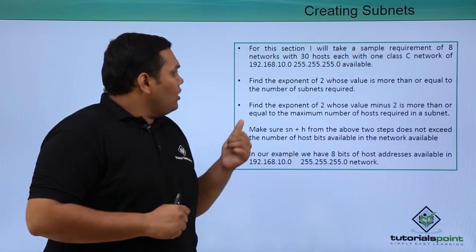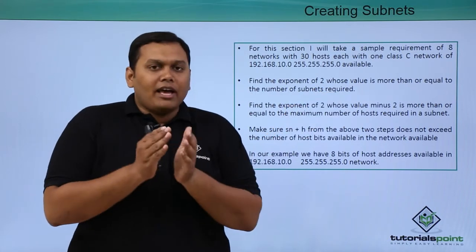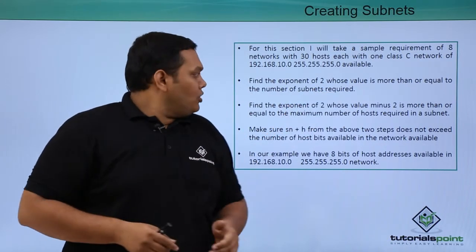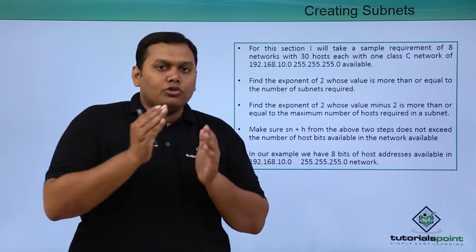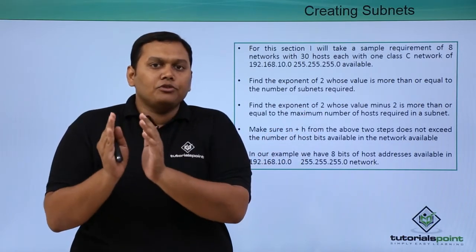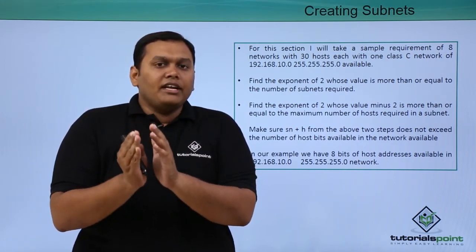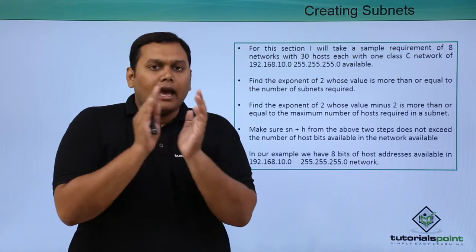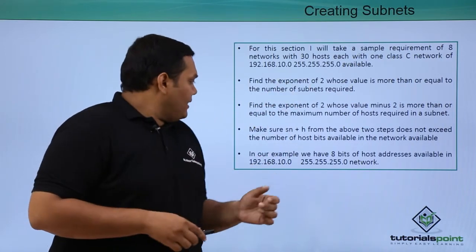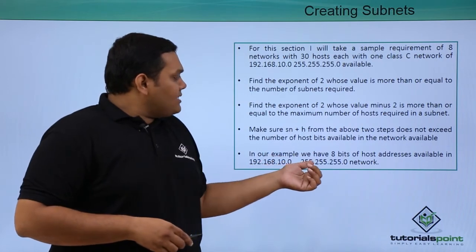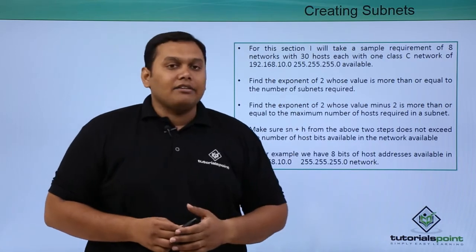Coming to the host component, to find the component we have a formula called 2^H minus 2. 2^H minus 2 gives you the host number. What is the network we require? We need 8 networks, so by combining these both, the Class C network will be segregated. In our example, you can see 8 bits of host address available in this Class C address.